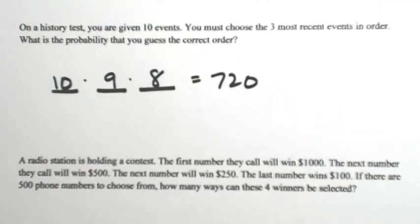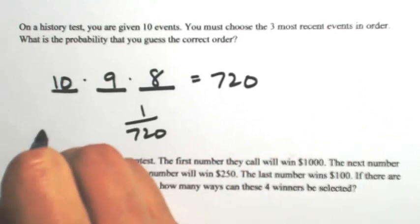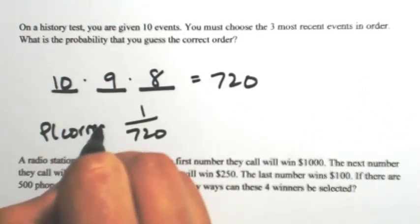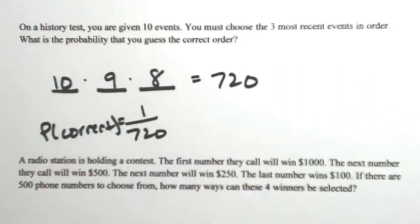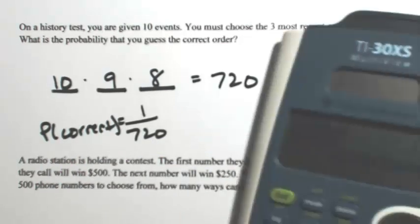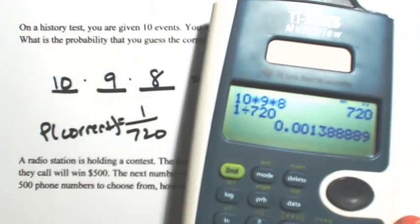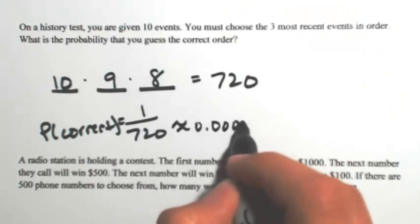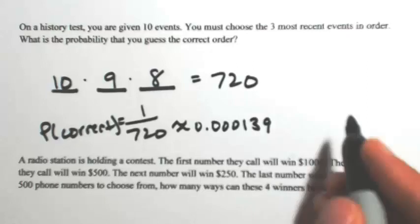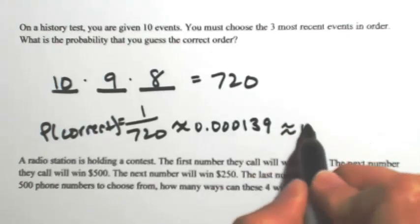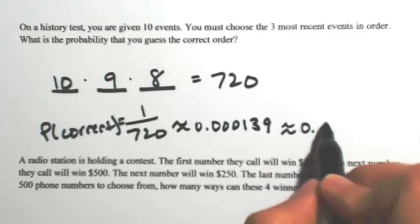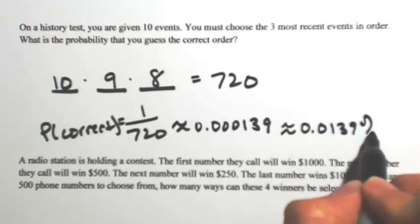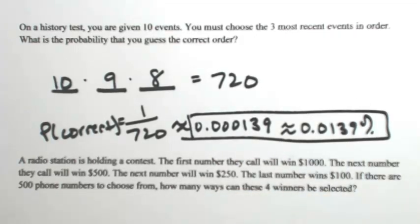What is the probability that you get the right order? There's only one correct answer, so it's 1 out of 720. That's about 0.00139. If you want this as a percentage, move the decimal two places to the right — you still don't even have 1%; it's 0.139%. That's a pretty small chance if you just guess.